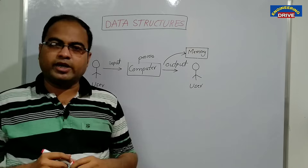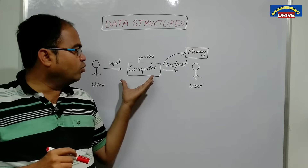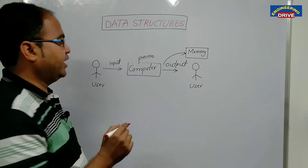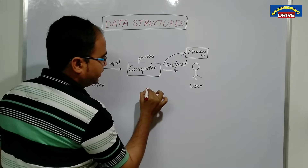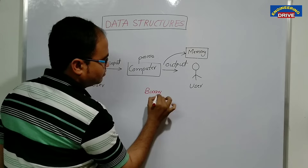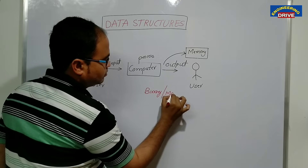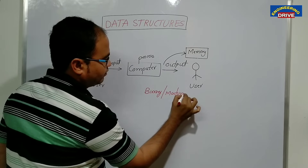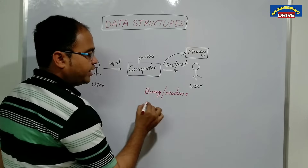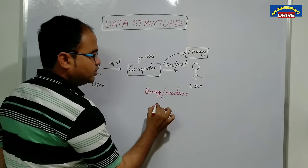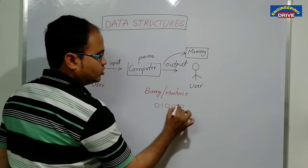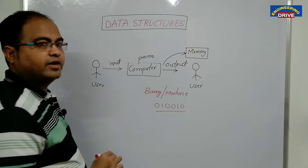Now the question that comes in our mind is, which language does our computer understand? Our computer understands only one language, that is binary language, or we can simply call it machine language. Only two digits are used in machine language — zeros and ones. For example, 0, 0, 1, 0 — this is an example of machine language.